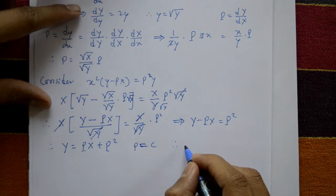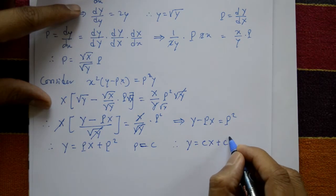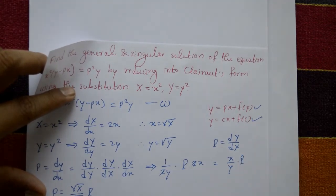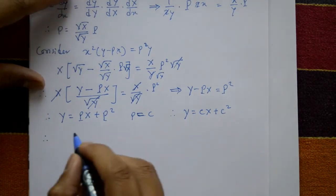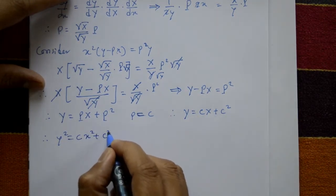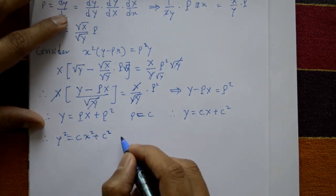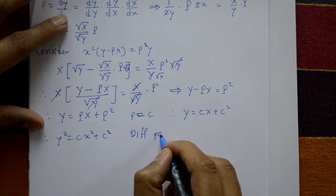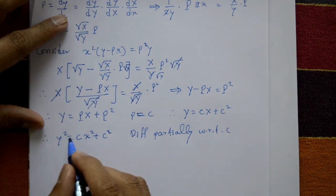With P equal to c, the general solution becomes capital Y equals cX plus c squared. Since capital Y equals y squared and capital X equals x squared, the general solution in original variables is: y squared equals c times x squared plus c squared. This is the general solution of the Clairaut equation.